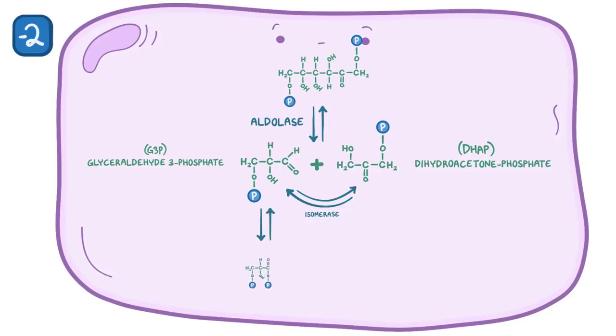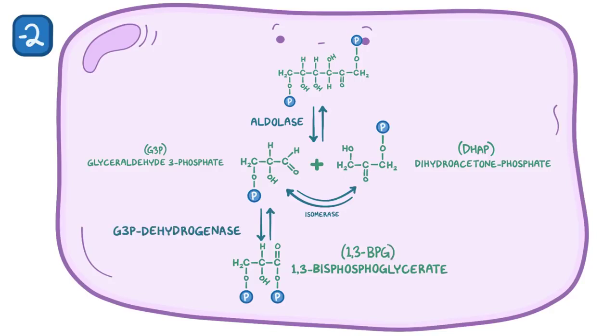Each G3P is converted into 1,3-bisphosphoglycerate, or 1,3-BPG, by an enzyme called G3P dehydrogenase. G3P dehydrogenase has two roles. It removes a hydrogen from G3P and gives it to a nearby NAD+, making NADH as a byproduct. It also adds a phosphate group to the first carbon of G3P, making 1,3-BPG. Now, since there are two G3P molecules, this happens twice, resulting in two NADH molecules.